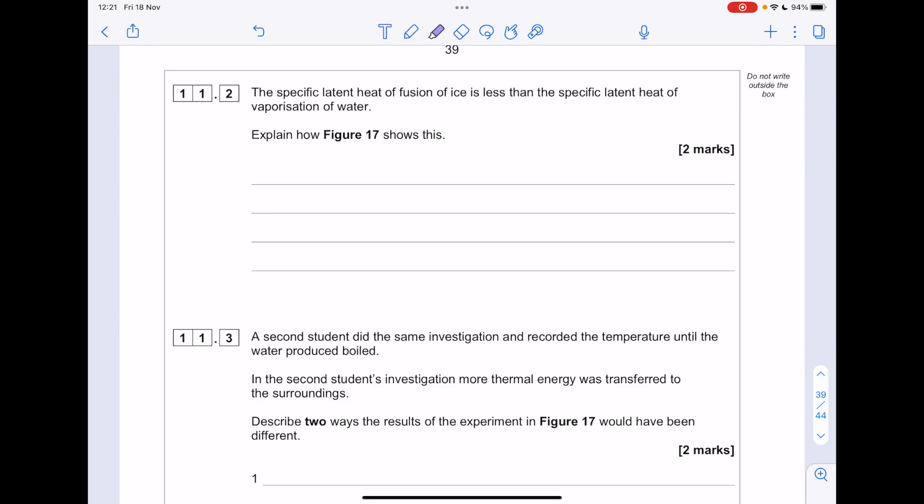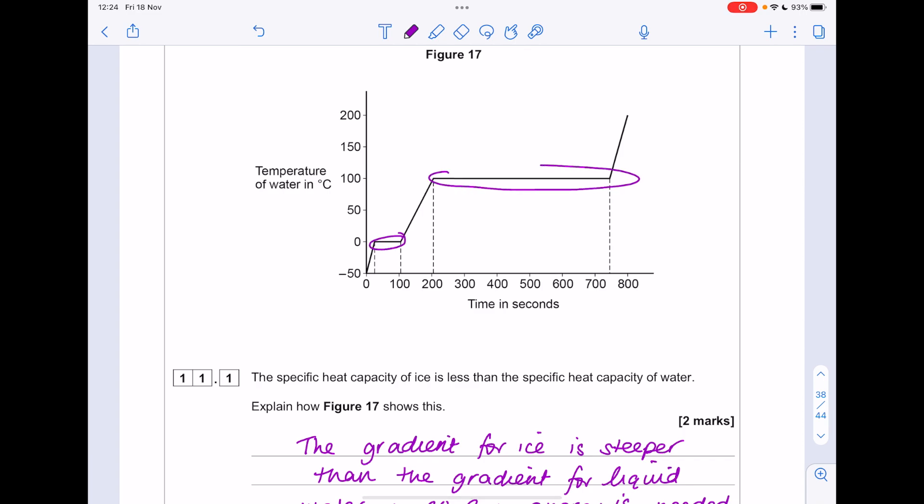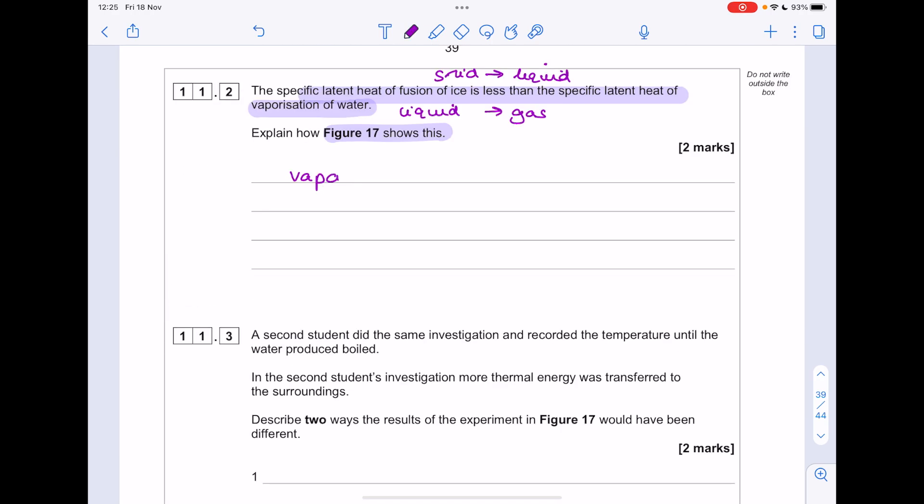The specific latent heat of fusion of ice is less than the specific latent heat of vaporization of water. Explain how figure 17 shows this. Now the specific latent heat of fusion is all to do with the amount of energy needed to convert a solid to a liquid. Whereas the specific latent heat of vaporization is liquid to gas. So solid to liquid is here, liquid to gas is here. Notice it takes so much longer to convert from a liquid to a gas. So vaporization of water took much longer than fusion of ice. Well, it means that there is less energy needed to change the state from solid to liquid.